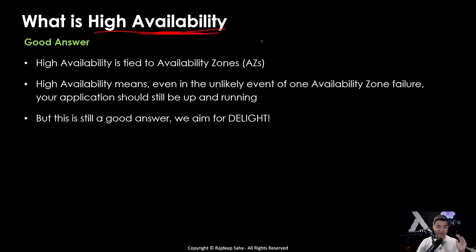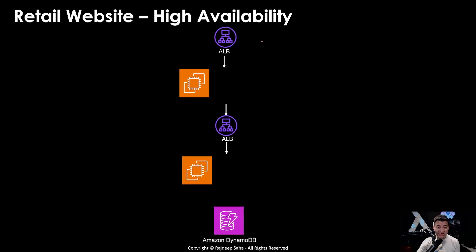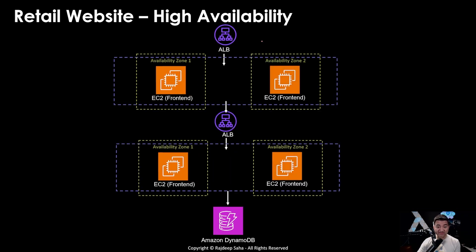You must separate yourself from the pack — that's how you get the job. To make this good answer delightful, you say: let me explain with an example. I have worked on a three-tier architecture with an external-facing load balancer, EC2s, an internal load balancer, more EC2s, and Amazon DynamoDB. High availability means even in the unlikely event of failure of one availability zone, the application should still be up. The application load balancer is inherently highly available. However, EC2s are not — one EC2 can only run in one availability zone, so to make it highly available I will spin up another EC2 in another availability zone. Amazon DynamoDB is inherently highly available, so even if one availability zone goes down, DynamoDB will still be up and running.